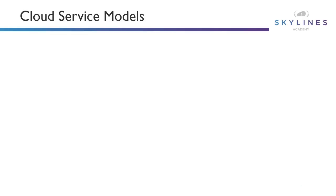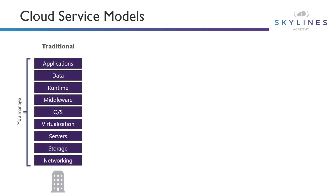Let's begin by taking a look at the cloud service models. If we look at the traditional way, this is what we would deploy in our data center, and this is the stack that we basically have to manage. From networking through storage, servers, and often a virtualization layer in the last 10 years, an operating system we might deploy, and then middleware, runtime, data, applications, et cetera. All of those we would manage and maintain in the data center.